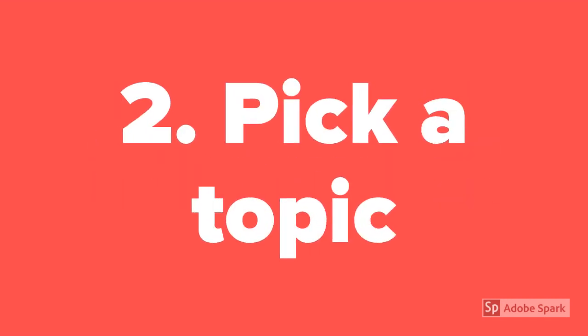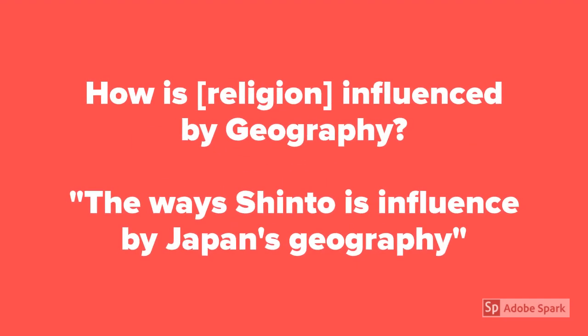The second step, which is what you should have done yesterday, is pick a topic. The general topic is religion and geography slash the environment, but you want to get a little more specific with your research paper. A way to think of a topic is by asking some questions beforehand, like: how is whatever religion — Buddhism, Christianity, whatever you chose — influenced by geography? If you chose Shinto religion, maybe it's the way Shinto is influenced by Japan's geography.